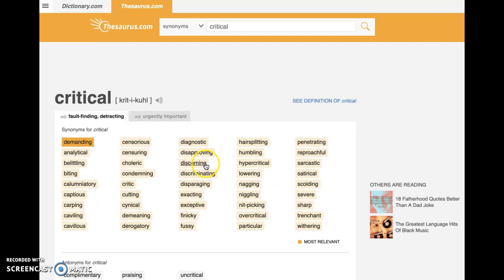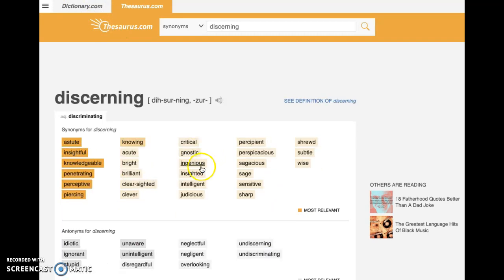And let's look at discerning. Again, mostly positive things here: astute, insightful, knowledgeable, penetrating, perceptive, knowing, bright, brilliant, clear-sighted, clever, ingenious, intelligent, perspicacious, sagacious, sharp, shrewd, wise.